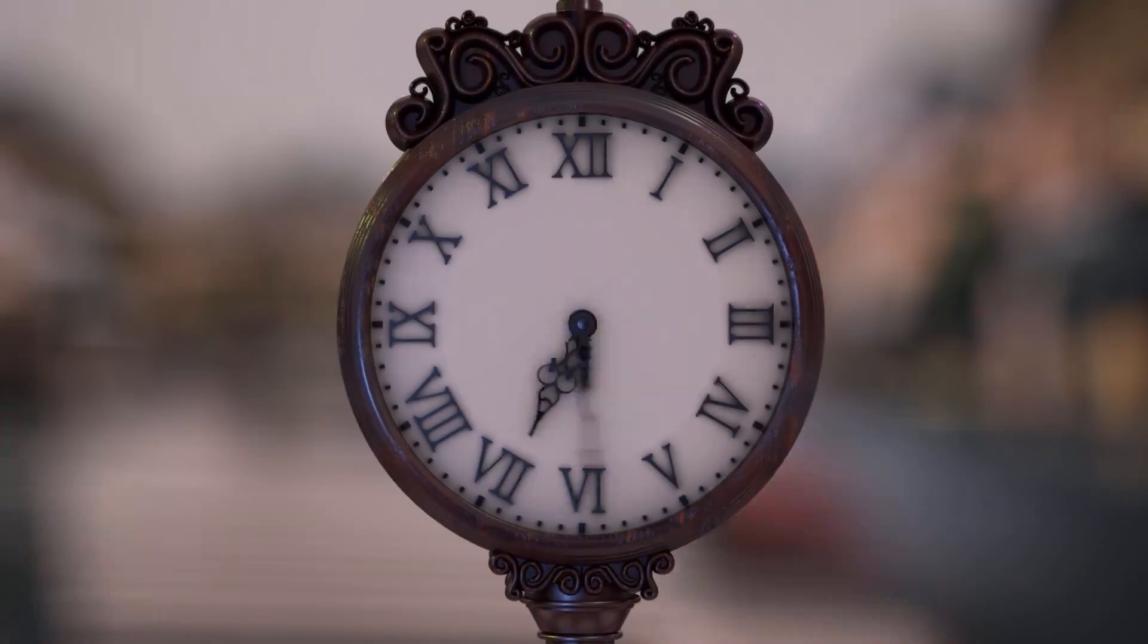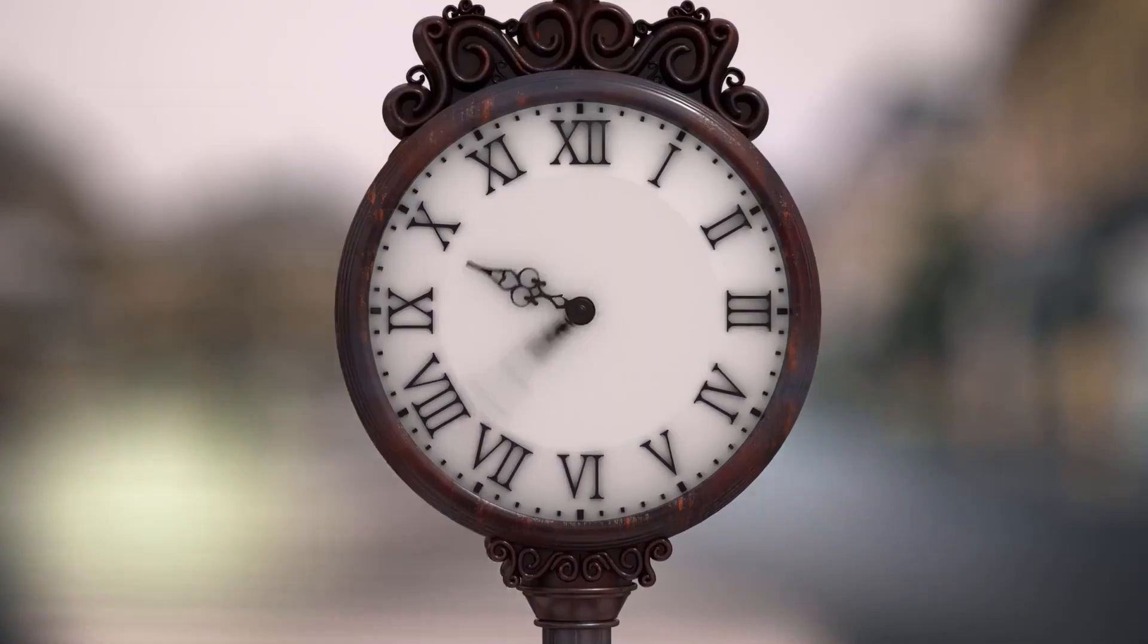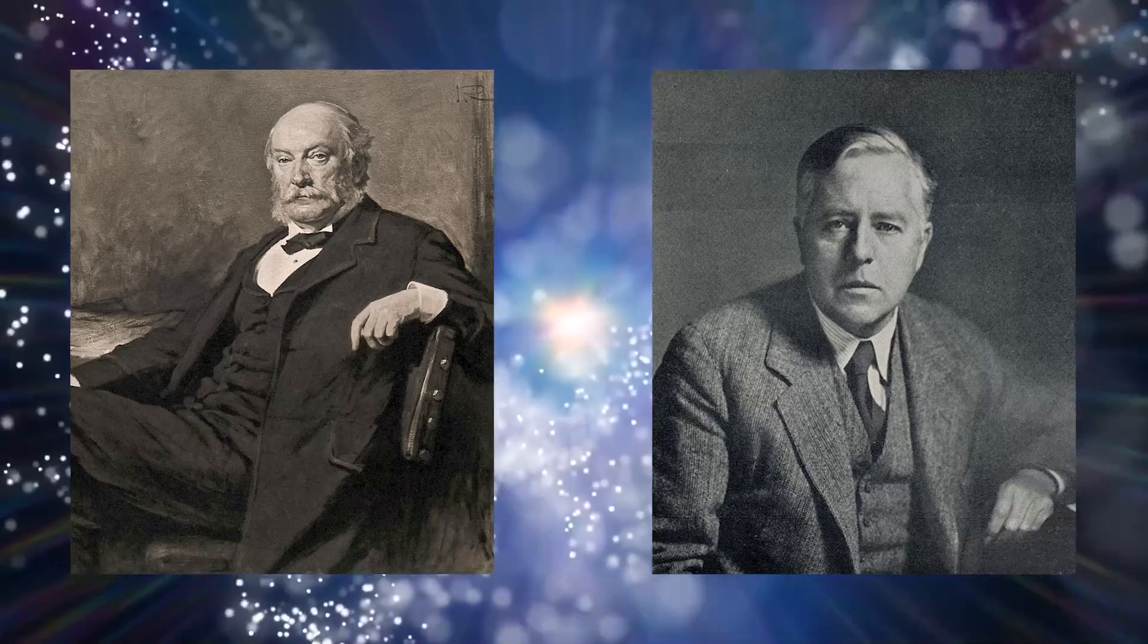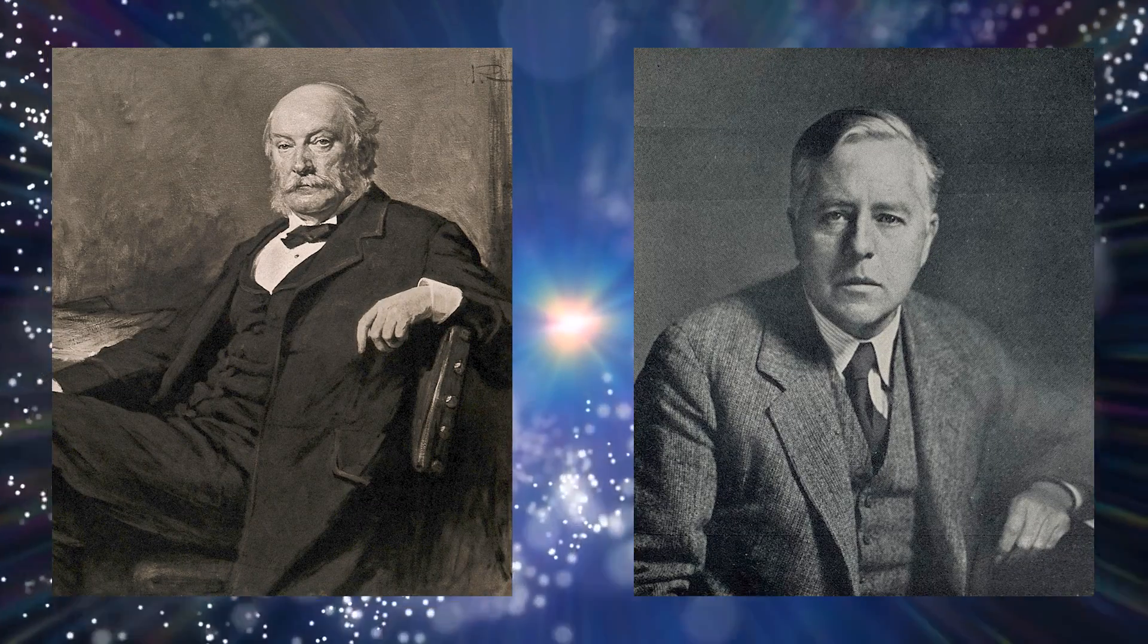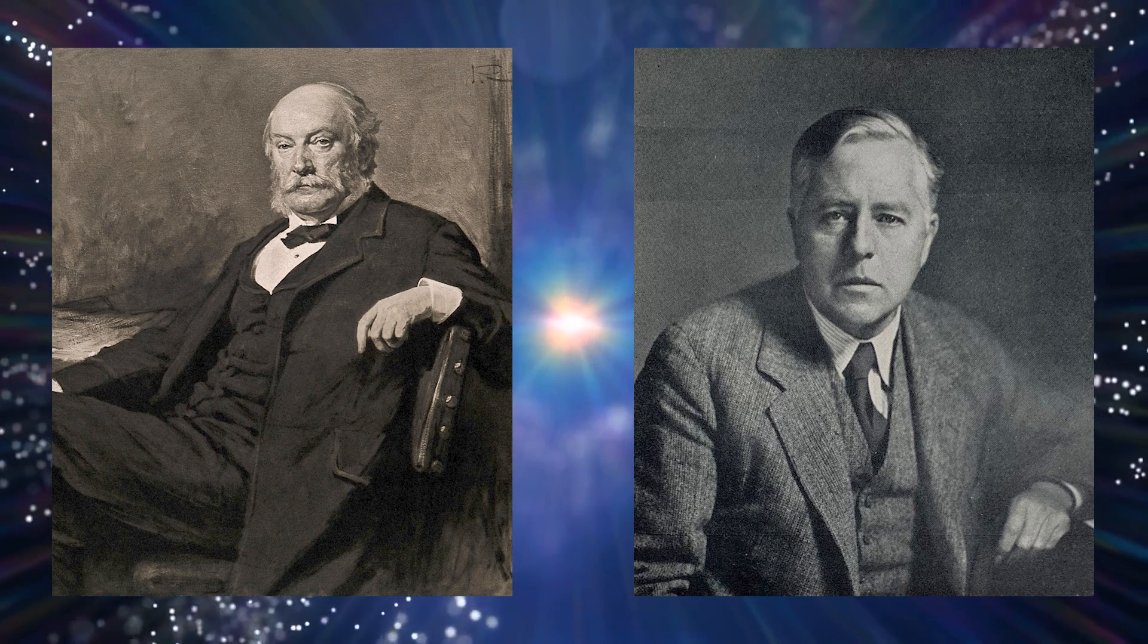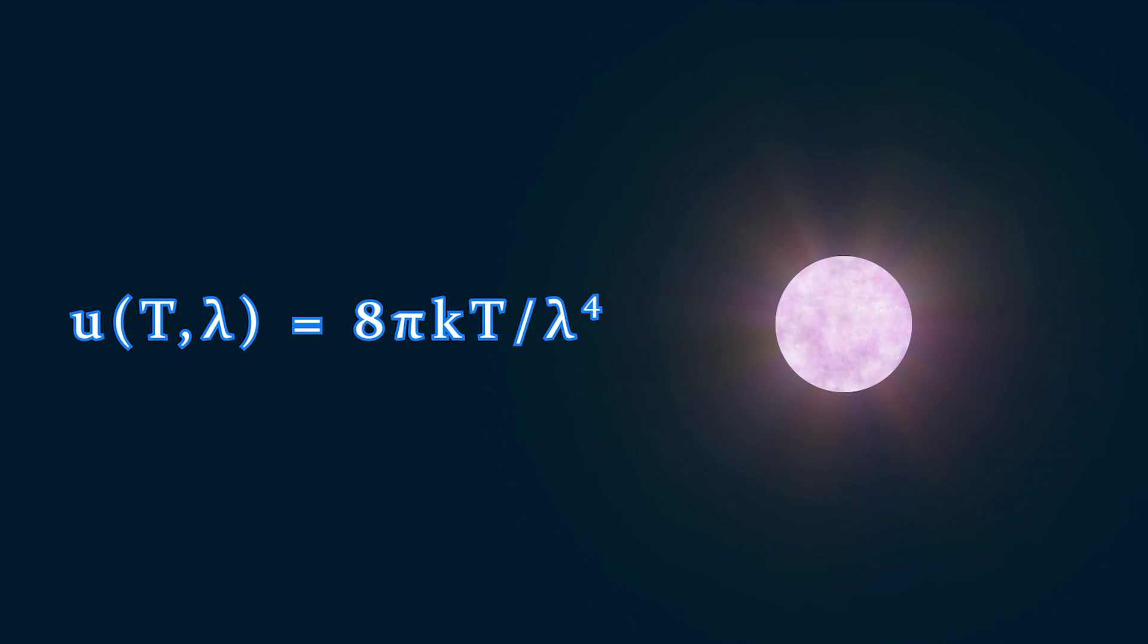However, by the end of the 19th century, evidence began to accumulate that everything about light might not be so straightforward. Building on the wave theory of light, British physicists John Rayleigh and James Jeans derived their famous law describing the radiative emission of heated bodies. According to this law, a body heated to a temperature T would emit electromagnetic radiation, including light, over a wide range of frequencies and wavelengths.